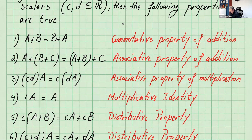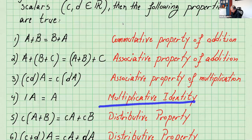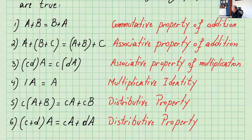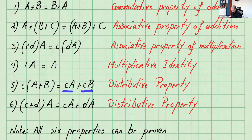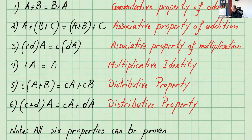One times A equals A — so one times any matrix gives you that same matrix, and that's the multiplicative identity. c times (A plus B) equals cA plus cB — that's the distributive property with the scalar. And (c plus d) times A equals cA plus dA — that's also the distributive property with the matrix.